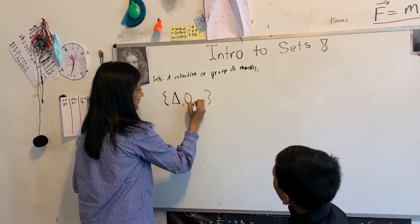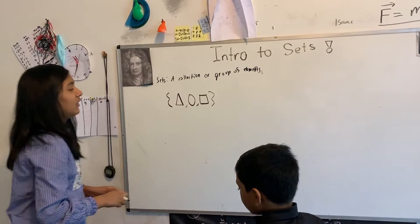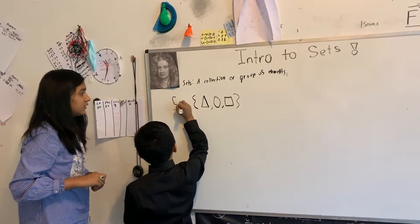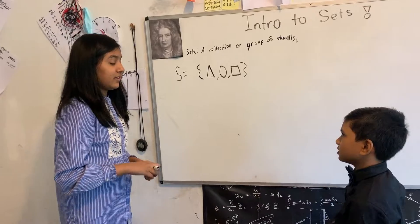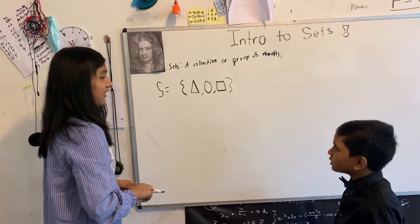So that's a triangle, that's a circle, and that's a square. Now wait, I think we should name this S for shapes. Because I know all of these are shapes, right? What is the size of the set? Yeah. So you mean the cardinality? Yes, the cardinality.